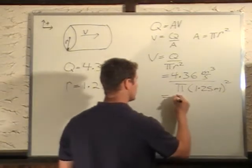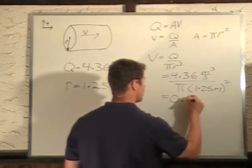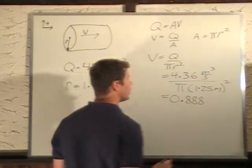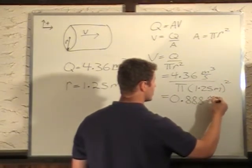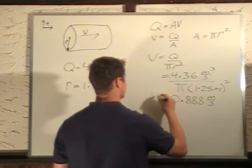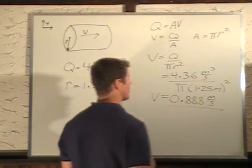We get a velocity of 0.888. Look at the units, meters squared cancels with two of those meters, gives us meters per second. That's our final answer.